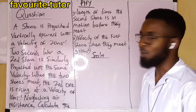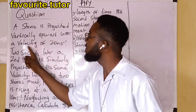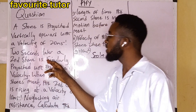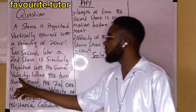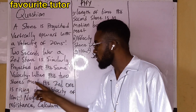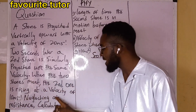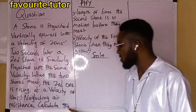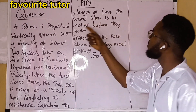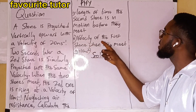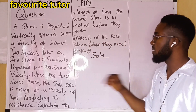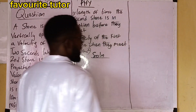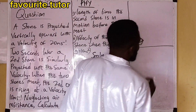A stone is projected vertically upward with a velocity of 20 meters per second. Two seconds later, a second stone is similarly projected with the same velocity. When the two stones meet, the second one is rising at a velocity of 10 meters per second. Neglecting air resistance, calculate: (1) the length of time the second stone is in motion before they meet, (2) the velocity of the first stone when they meet. Acceleration due to gravity is 10 meters per second squared.